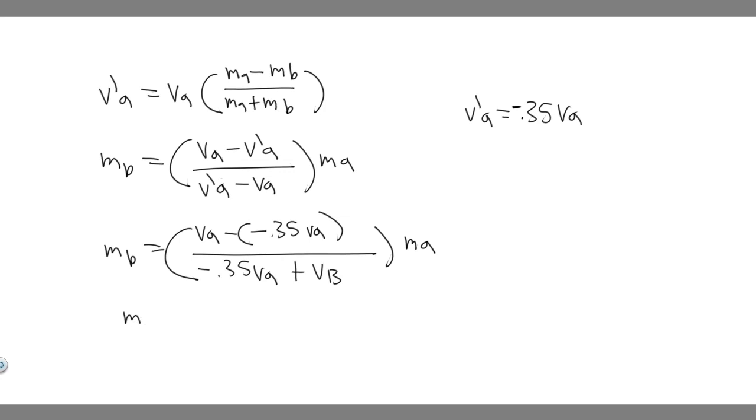If we do va minus, this is going to become plus, so it's going to become on top 1.35. You want to ignore the va—you're just going to take the numbers because it's kind of like a ratio. And then on the bottom, it's just going to be 0.650.